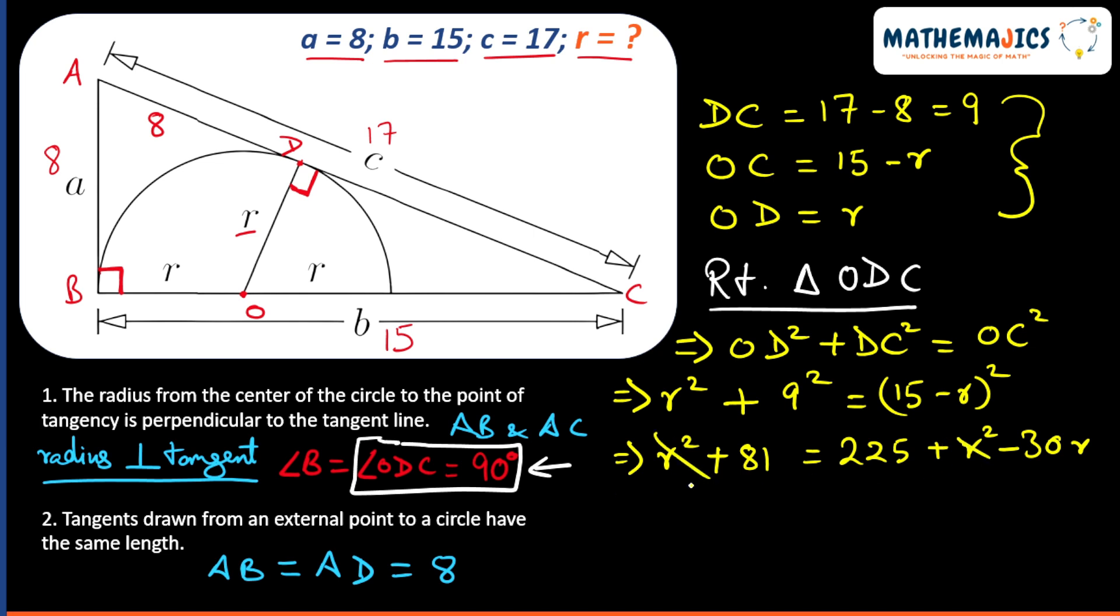R² and R² can get cancelled. Solving this, we will get 30R is equal to 144.